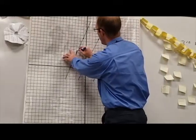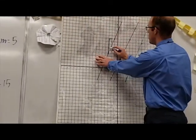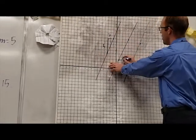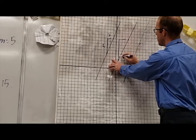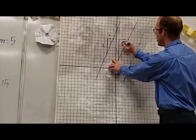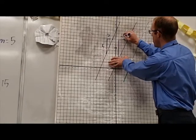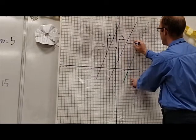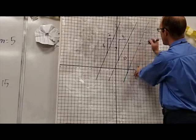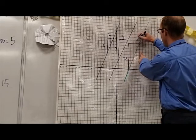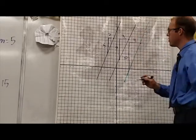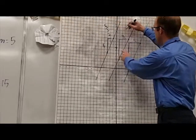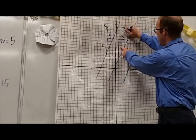This line goes up and to the right — up five and to the right two. This line goes up and to the right — up seven and to the right three. And this line goes up and to the right — up ten and to the right four. If we organize those as slope, rise over run would give us five-halves. This one would be seven-thirds.